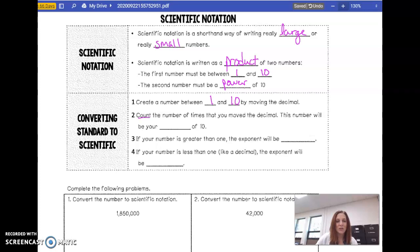And then you're going to count. You're going to count the number of times you move the decimal. This number will be your power of 10. So we're going to think of this in terms, maybe not yesterday, how we were counting zeros. Remember, that only works for powers of 10. But we're going to be talking about counting how many times you move the decimal.